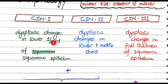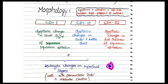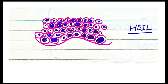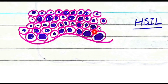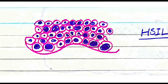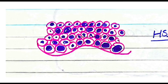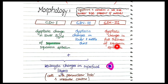To summarize: in CIN 1, dysplasia is in the lower one-third; in CIN 2, it is in the lower and middle one-third; and in CIN 3, dysplasia is present throughout all layers. CIN 2 and CIN 3 are collectively called high-grade squamous intraepithelial lesion, while CIN 1 is low-grade. In this image of CIN 3, you can see cells that are abnormally large with large nuclei — these dysplastic cells are present not only in the lower one-third but in the upper layers as well.